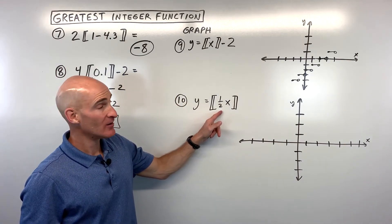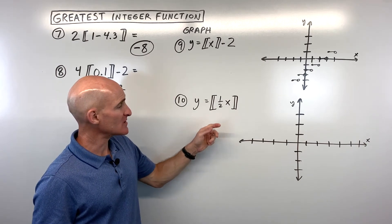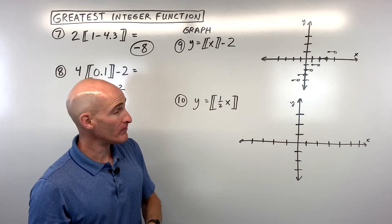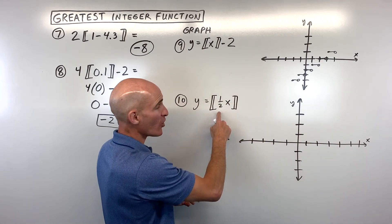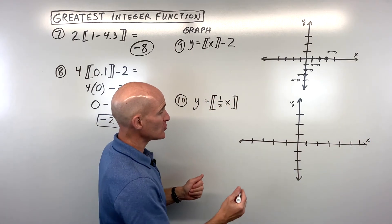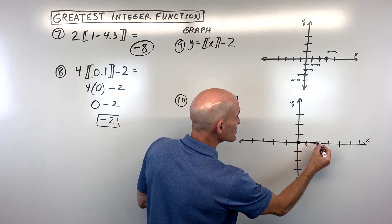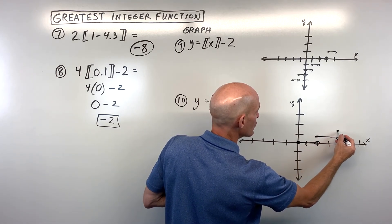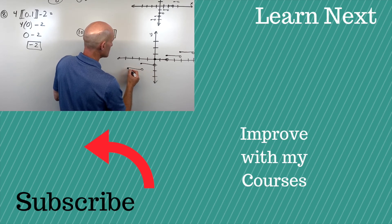For number 10, y equals the greatest integer function of 1/2 x. Notice the 1/2 is grouped with the x, so it affects the horizontal direction — but with the opposite effect. Our intuition might say 1/2 is a shrink, but it's actually a stretch. We multiply all x values by the reciprocal, 2, giving us a horizontal stretch by a factor of 2. So on the graph, the stairs are 2 units long — closed on the left, open on the right — then jump up to the next stair, also 2 units long, and this continues in both directions.